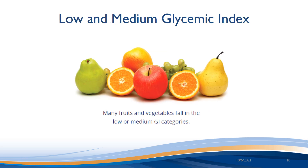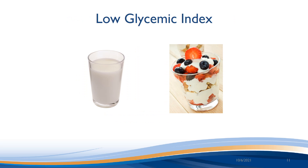The good news is that many fruits and vegetables fall in the low or medium GI categories. Almond milk, soy milk, cow milk, and yogurt are also low GI.